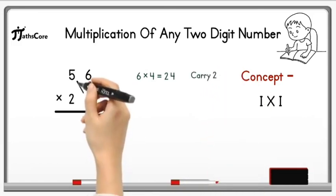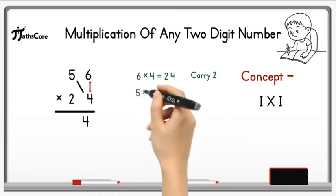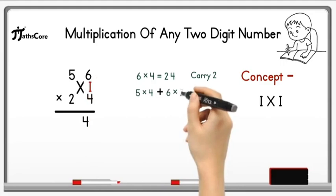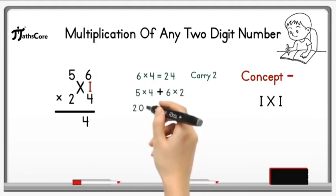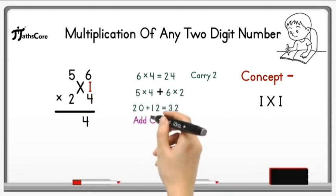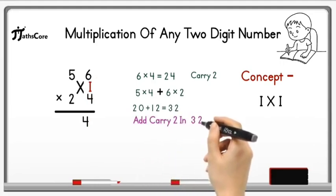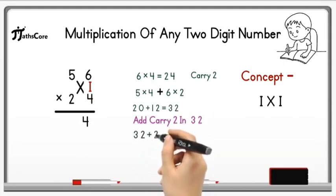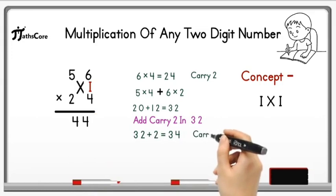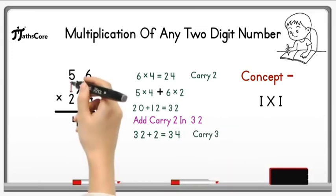After that we need to do cross multiplication and addition. So 5 × 4 plus 6 × 2. 5 × 4 is 20 and 6 × 2 is 12. 20 plus 12 is equal to 32. Now add this carry 2 in 32, so 32 plus 2 is equal to 34, which is a 2 digit number. So write down 4 here and take 3 as a carry.